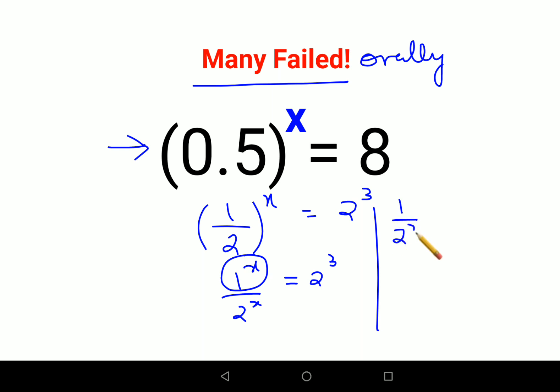When I shift this number to the numerator, I can do that by making the index negative, right? There is a rule in indices: 1 upon a raised to n can be written as a raised to minus n.